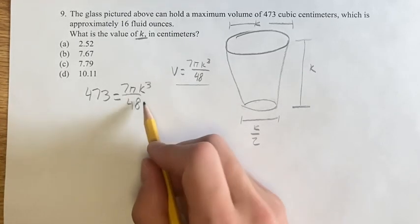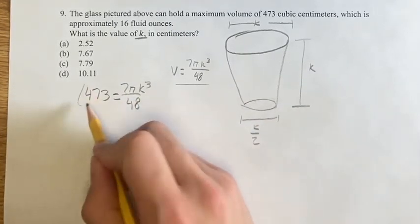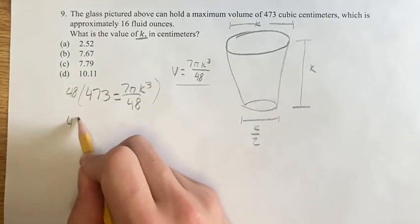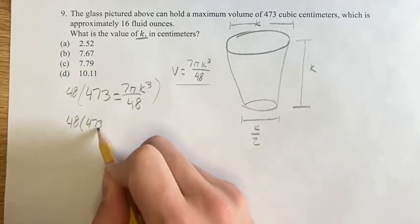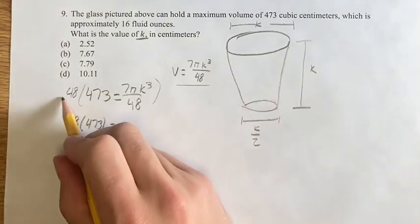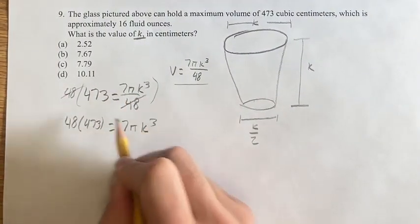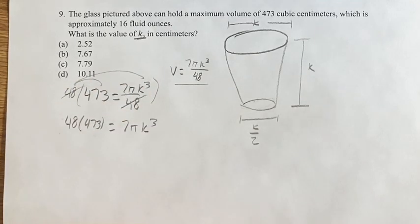So to solve for the variable, firstly, we have to multiply both sides by 48. On this side, we just have 48 times 473 is equal to, on the other side, the 48s cancel. So we have 7 pi k cubed, and we're distributing back in to get rid of the denominator.